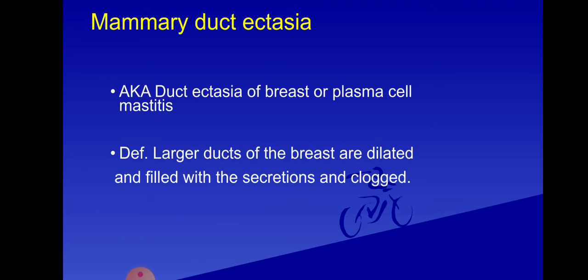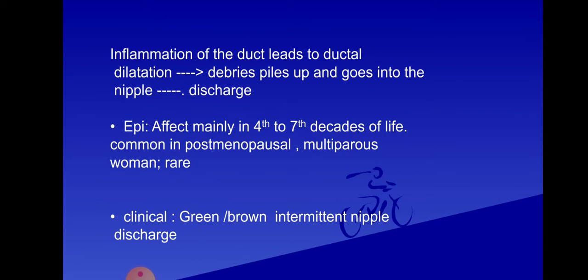The next important condition is mammary duct ectasia, also known as duct ectasia of the breast or plasma cell mastitis. This is defined as large ducts of the breast being dilated and filled with secretions. Ectasia means dilatation — ductal dilatation. These dilated ducts are filled with secretions that clog the duct. Inflammation of the ducts leads to ductal dilatation, producing debris that travels to the nipple and produces nipple discharge.